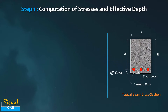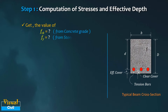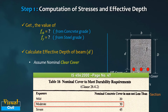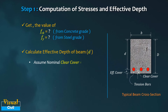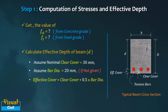Start the solution by computation of stresses and effective depth of beam in Step 1. Get the values of fck and fy. Next, calculate the effective depth of the beam. Assume nominal clear cover based on clause 26.4.2, Table 16 — take clear cover equal to 30 mm for moderate exposure in absence of exposure data. Assume bar diameter equal to 20 mm for simplicity. Calculate the effective cover by adding the clear cover with half of the bar diameter.